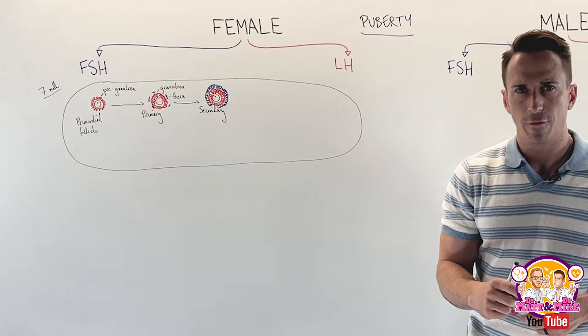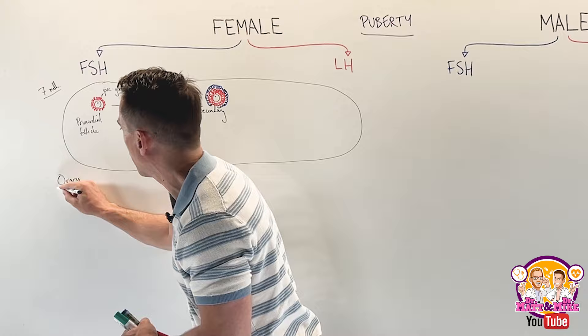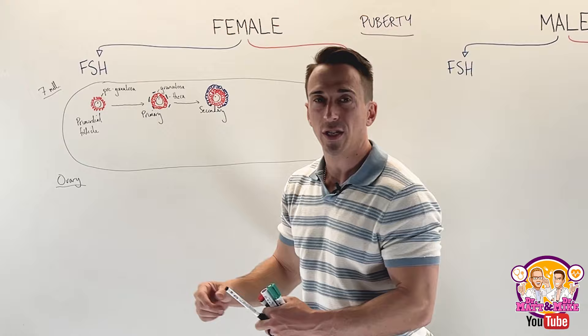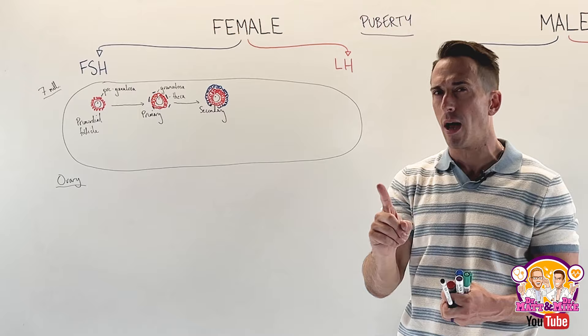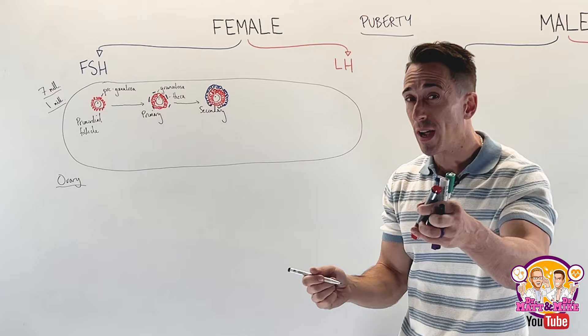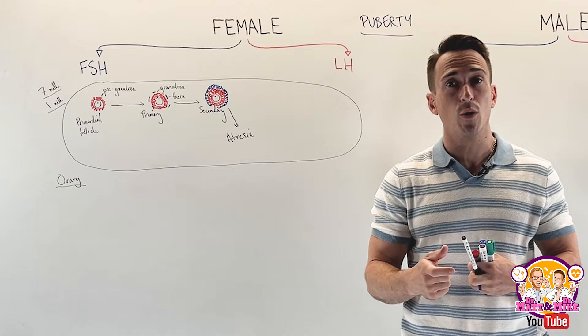Pre-puberty, inside the ovary of a developing female fetus at 20 weeks gestation, 7 million primordial follicles exist and they undergo this folliculogenesis process. But here's the thing: at 20 weeks gestation we may start with 7 million, but by the time a female is born, we go from 7 million down to only 1 million — because follicles undergo atresia, disintegrating and being reabsorbed back into the ovary. Six million undergo this process just from 20 weeks gestation to birth.